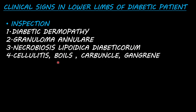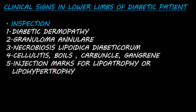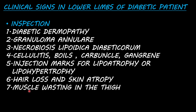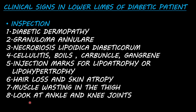We will see cellulitis, boils, carbuncle, and gangrene. There will be injection marks, and there will be lipodystrophy — lipoatrophy or lipohypertrophy — because of insulin use. There will be hair loss and skin atrophy because of autonomic neuropathy. There will also be muscle wasting in the quadricep area around the knee joint.